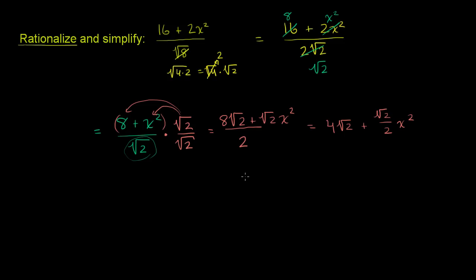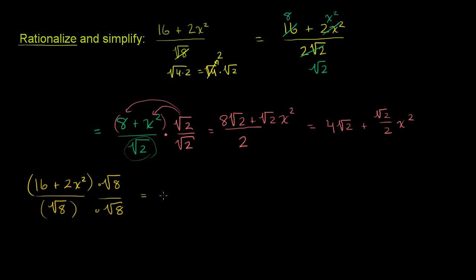There are multiple ways to do this. We could have rationalized right from the get go. Starting with our original problem: 16 plus 2x squared, all over the principal square root of 8. We could rationalize by multiplying the numerator and the denominator by the principal square root of 8. In the denominator we'd just get 8, and in the numerator we'd get 16 times the principal square root of 8 plus 2 times the principal square root of 8 times x squared.